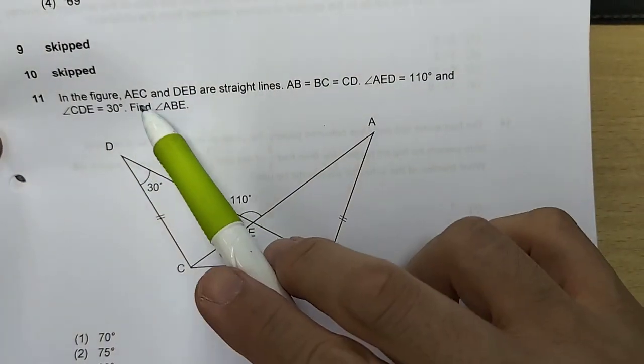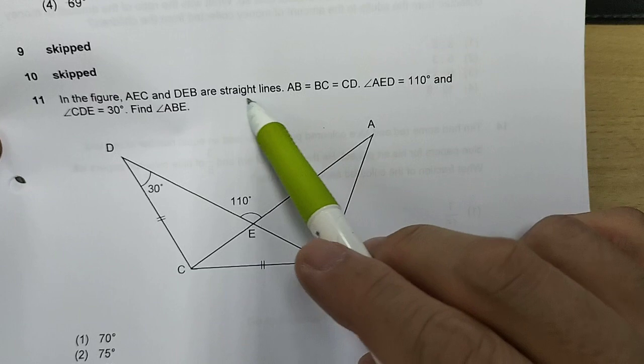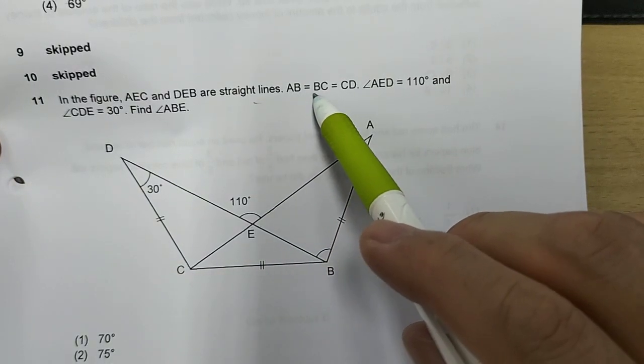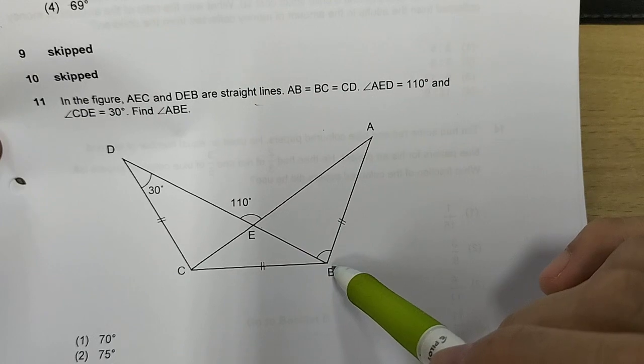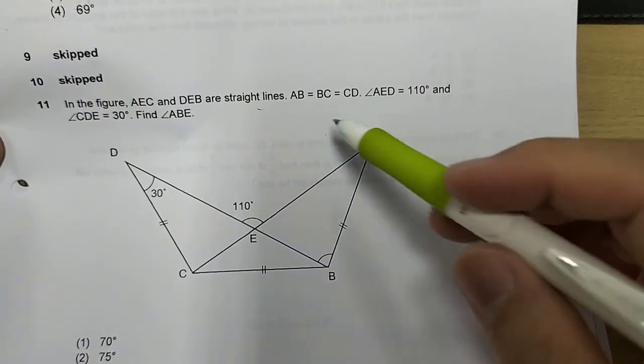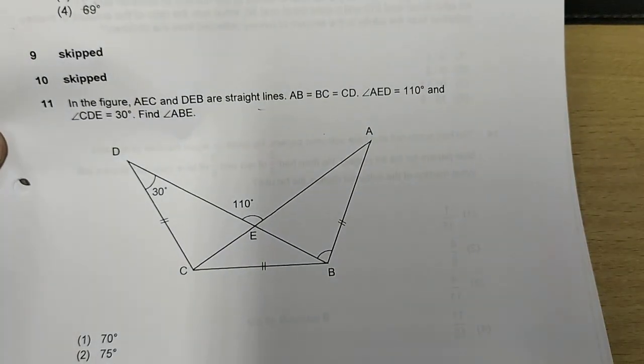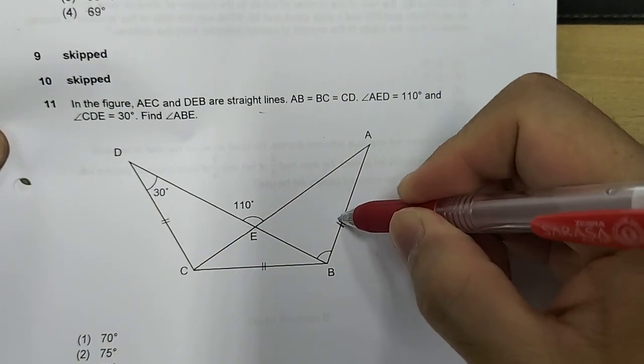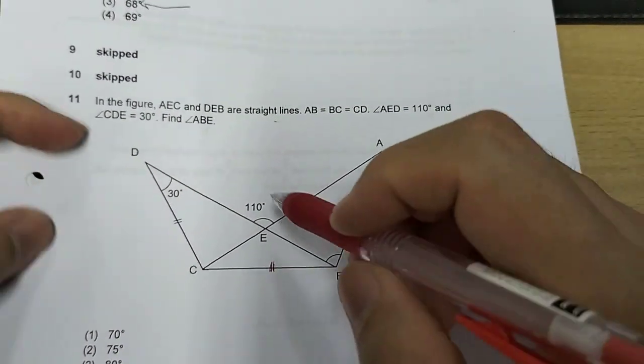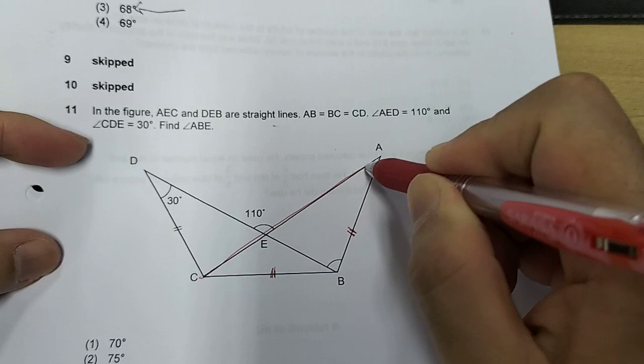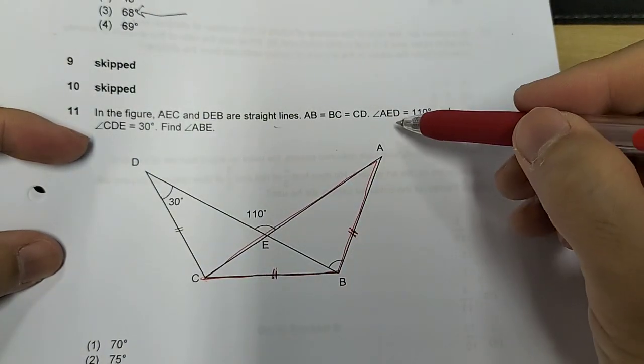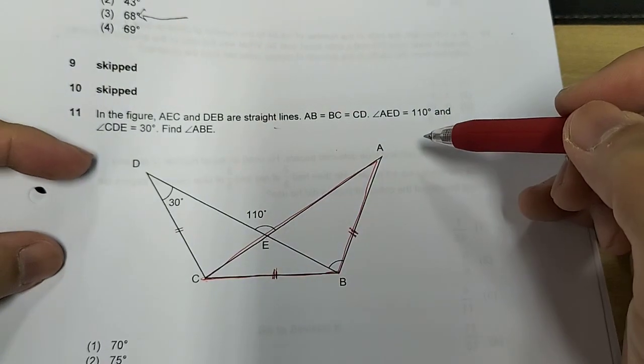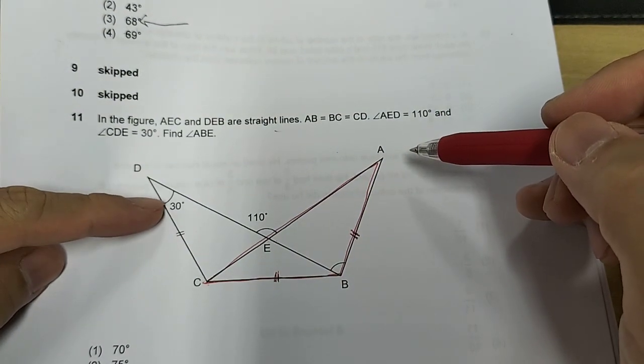Next one. In the figure, AEC and DEB are straight lines. Very important. AB equals to BC equals to CD. And they have even kindly given us this what I call toothpicks. And this tells me now that this triangle is an isosceles triangle. Angle AED is 110. CDE is 35. Find angle ABE.